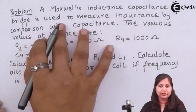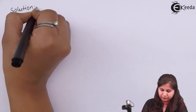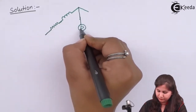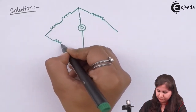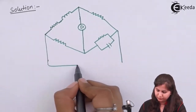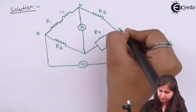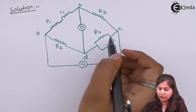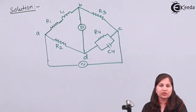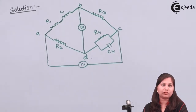We are given the Maxwell inductance capacitance bridge, so first we are going to draw the circuit for this bridge. Instead of just remembering the balance equation for this Maxwell inductance capacitance bridge, we will derive that equation and then put the values in it.